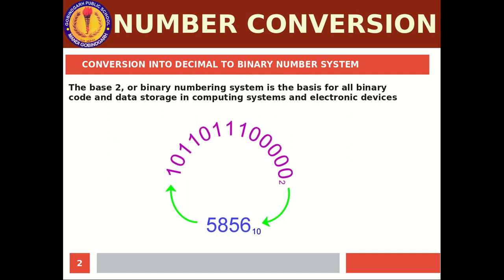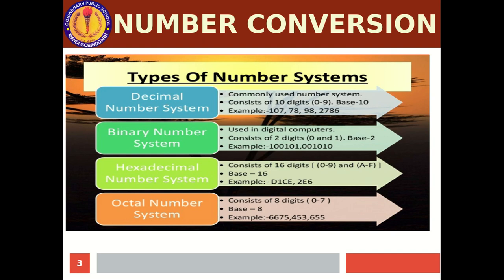Why do we need to convert decimal numbers to binary? Because the computer can only understand binary language — digital signals zero and one. As human beings, we can understand decimal numbers like 5856. We need to convert it into a binary number like 10110111000000. A computer can't understand decimal, so we need to convert it to binary. And for human beings to understand, it needs to be converted back into decimal — a high level language.